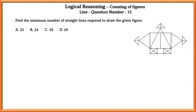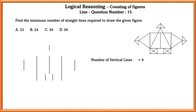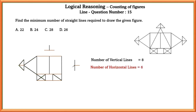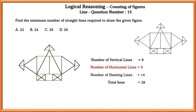Question number fifteen: find the minimum number of straight lines required to draw the given figure. The number of vertical lines equals 8, horizontal lines equals 6, and slanting lines equals 14. So the total number of lines equals 28.